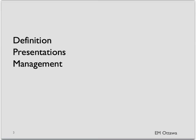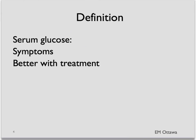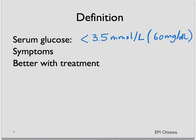In this segment, we'll go through the definition of hypoglycemia, how the patients might present, and once they get to the emergency department, what should we do with them? Hypoglycemia is defined as a serum blood glucose of less than 3.5 millimoles per liters or 60 milligrams per deciliter. Patients who have hypoglycemia should also have some symptoms of hypoglycemia, and once their hypoglycemia is being reversed, their symptoms also get better.